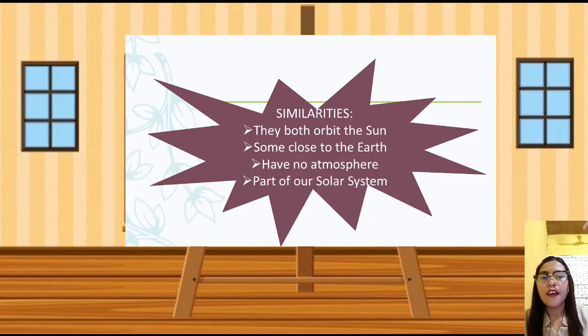Here are some of their similarities. First, they both orbit the sun. Second, some are close to the Earth or they are near-Earth objects. Third, they have no atmosphere. And last, they are part of our solar system.